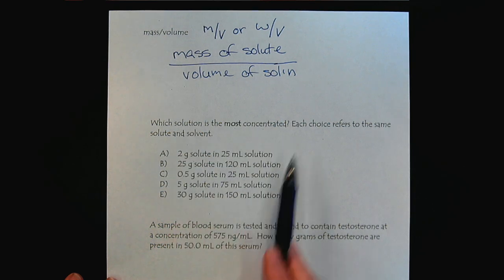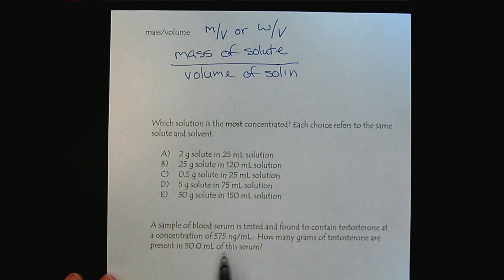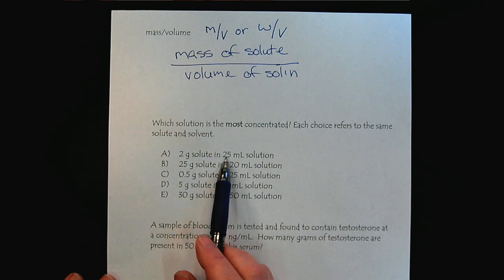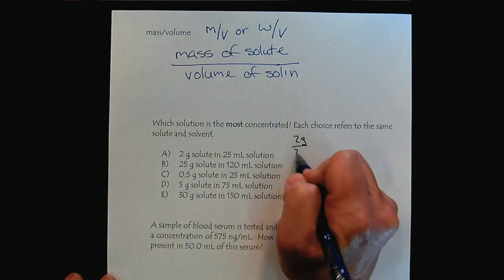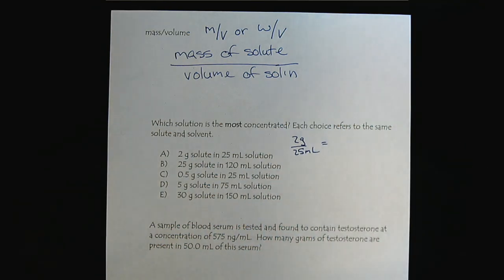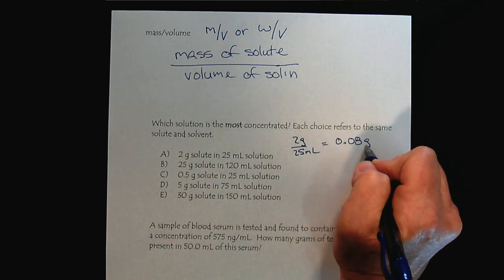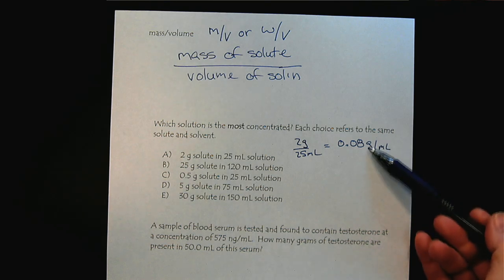Let's see if you guys are getting this. Which solution is the most concentrated? We have the same solute and solvent. If we have 2 grams of solute and 25 mL of solution, we would punch that into our calculator and we would see that we would have 0.08 grams per milliliter. This would be a mass over volume concentration because we have a mass unit divided by a volume unit.